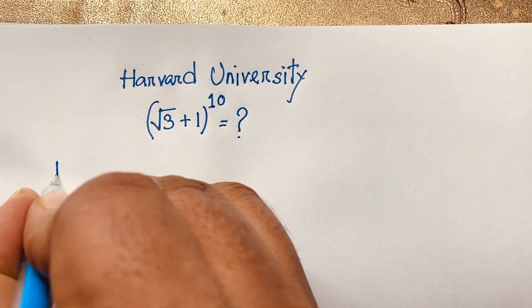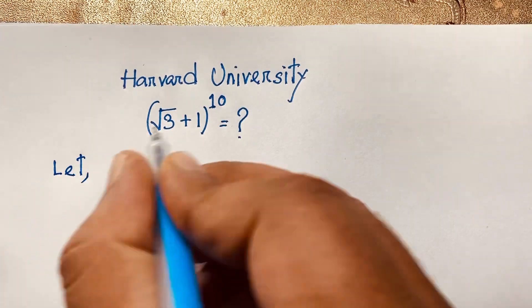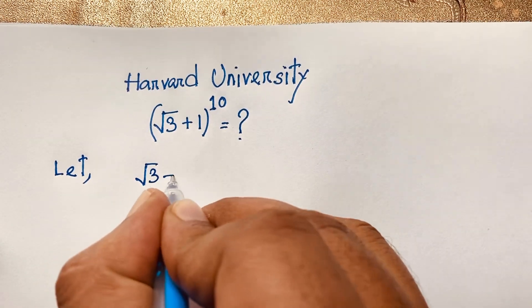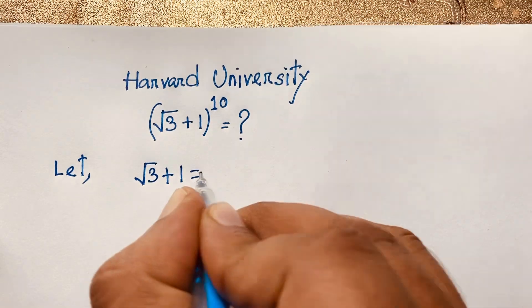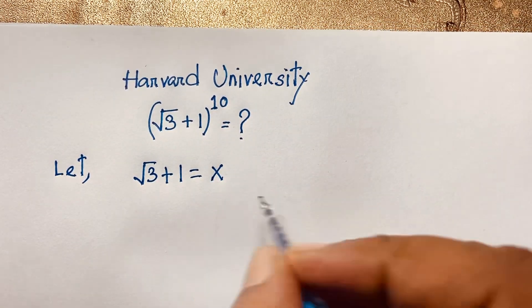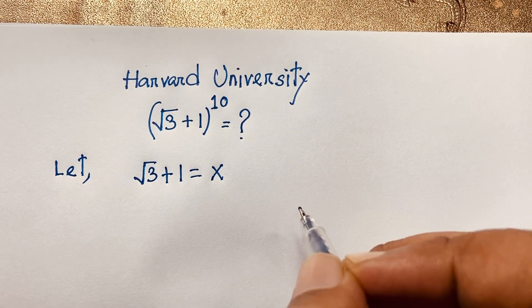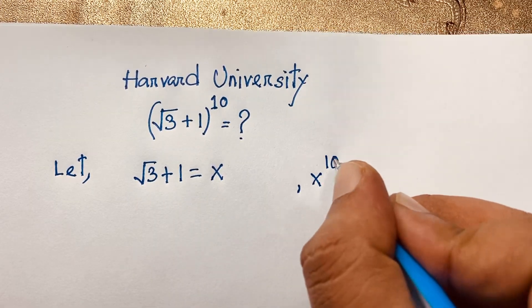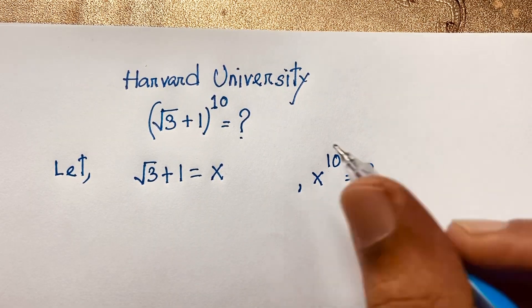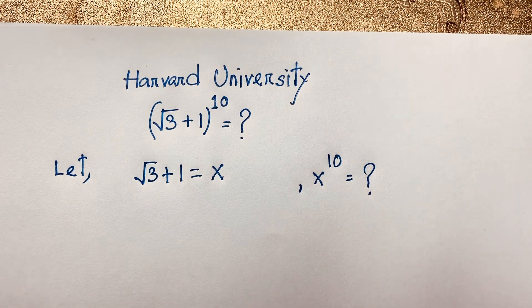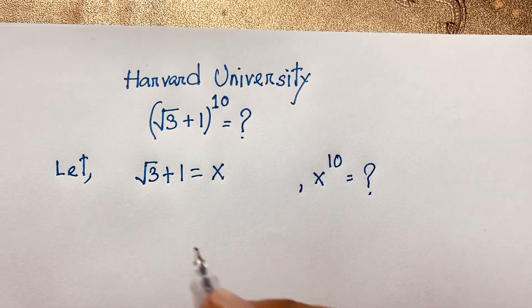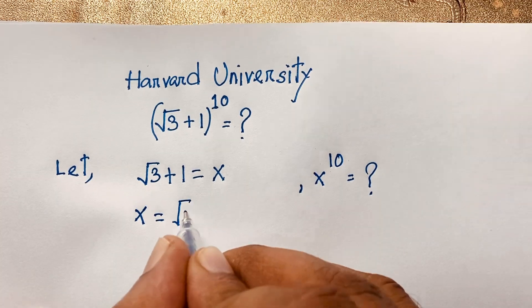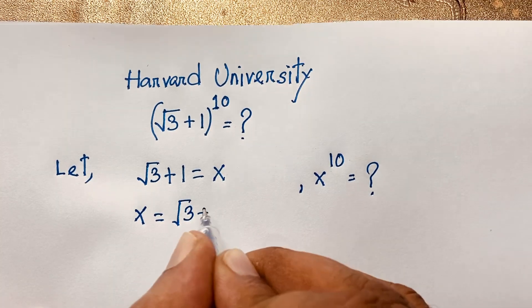Let square root 3 plus 1 be equal to x. We let this equal x. Our target is x to the power 10 is equal to what? You can see this expression: x is equal to square root 3 plus 1.